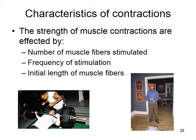Frequency of stimulation determines how often the motor neuron fires an action potential. Higher frequency means more calcium released, more troponin molecules bind calcium, more tropomyosin moves off binding sites, and more cross-bridge formation occurs. Higher frequency stimulation is used for intense activities like bench pressing.